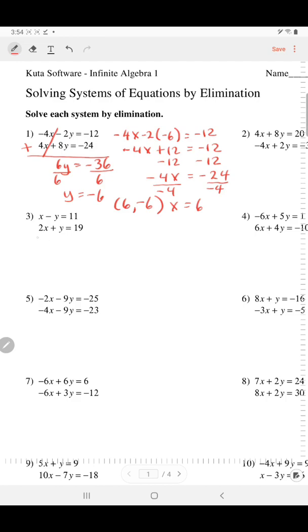Let's try another one, number 3. If you add those equations, notice that the y's have opposite coefficients. They will cancel. Add the x's. There's an invisible one there. 1x plus 2x is 3x. Add 11 and 19, it's 30. Divide, x equals 10. Plug it back into either original equation. 1x minus y equals 11. Subtract 10.